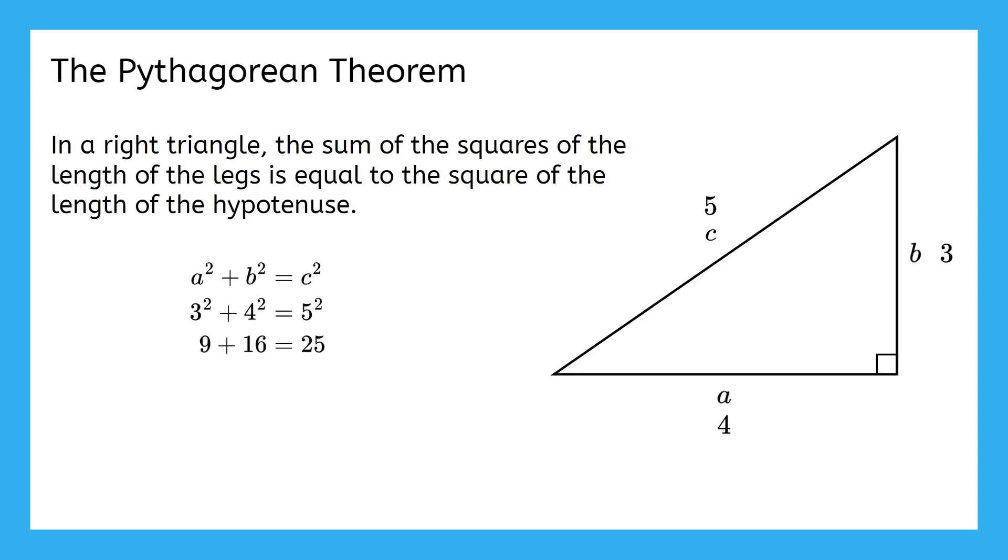So, while you have to always label the hypotenuse c when you're doing the Pythagorean formula, it doesn't matter which leg you label as a and which leg you label as b.